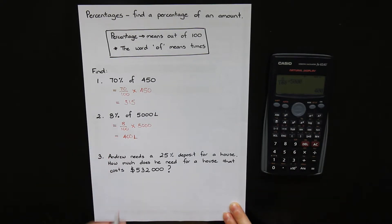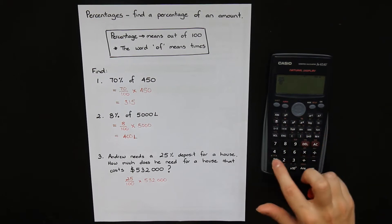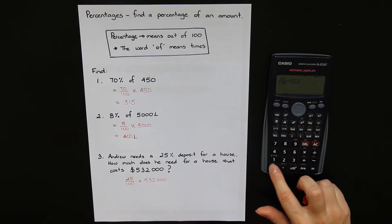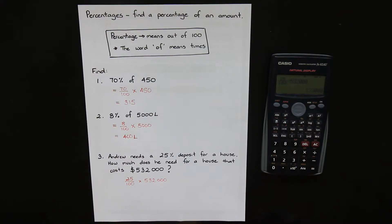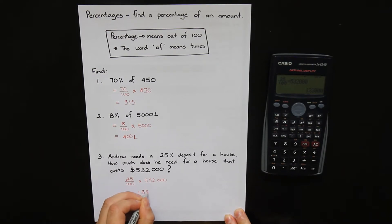So basically that's a wordy way of saying we want to find what 25% of 532,000 is. So that's just like these questions. 25% is 25 over 100 of 532,000. Grab the calculator.